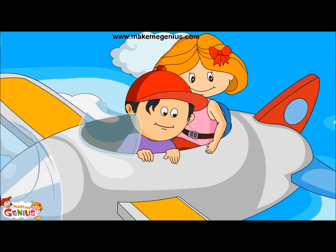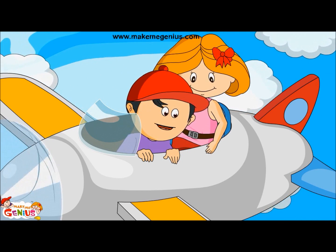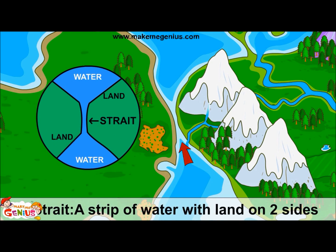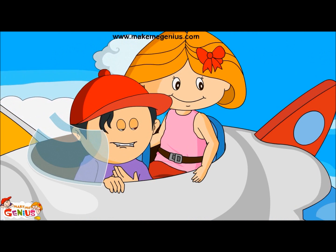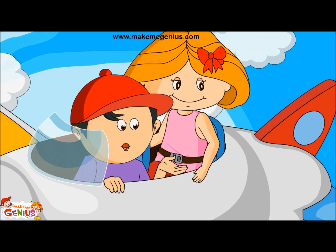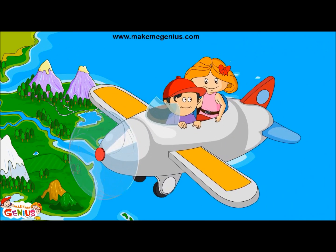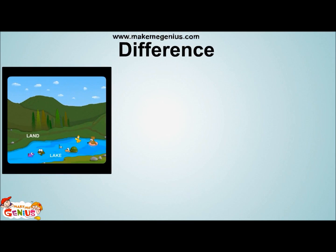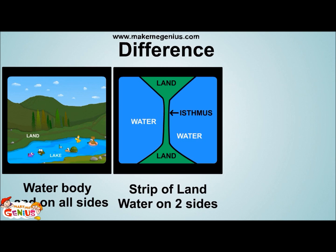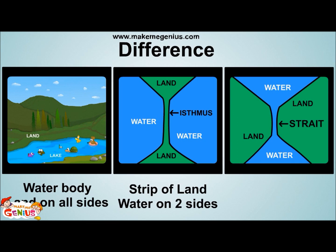What is that? It is a water body having land on both sides. It is called a strait. I am confused — can you tell me about lake, isthmus and strait again? Sure, focus on the screen. A lake is water with land on all sides. An isthmus is a strip of land with water on two sides. And a strait is a strip of water with land on two sides — it is just the opposite of an isthmus.